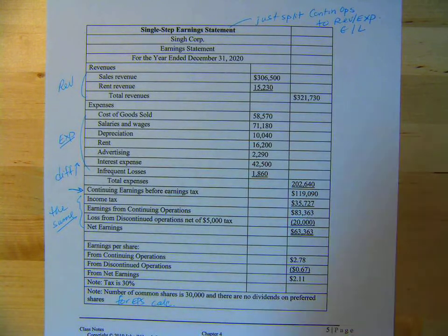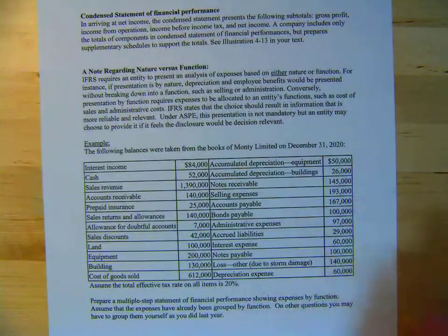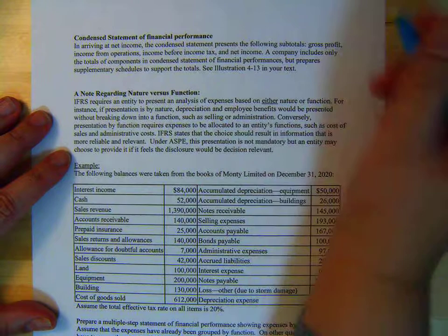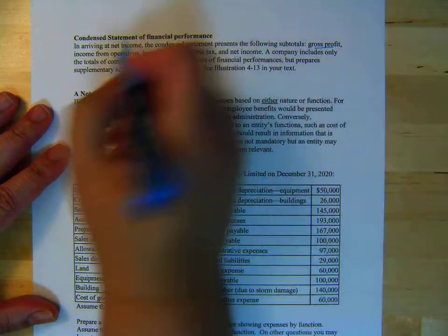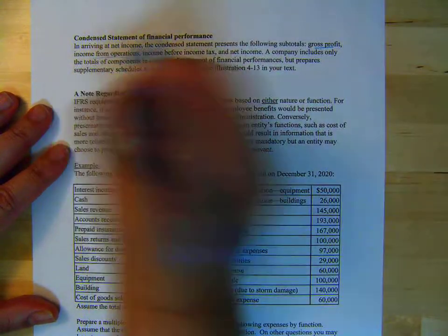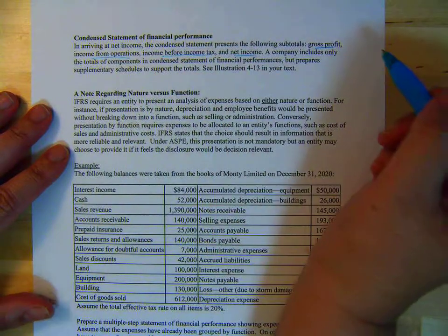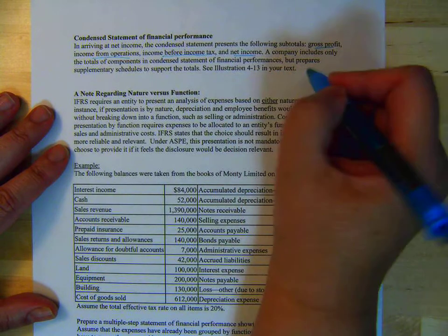The condensed statement shows Gross Profit, Income from Operations, Income before Tax, and Net Income. You can see it in Illustration 4.13 in your text.